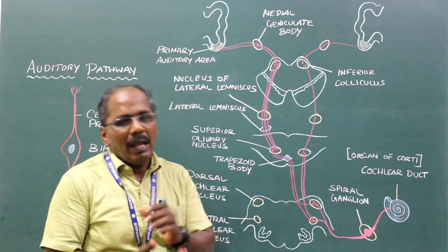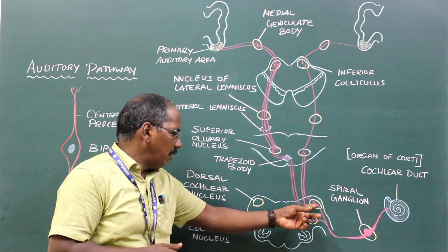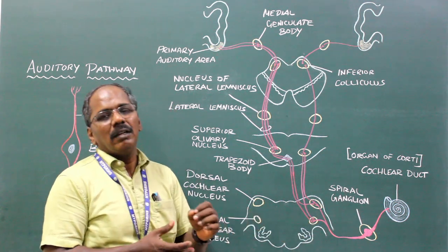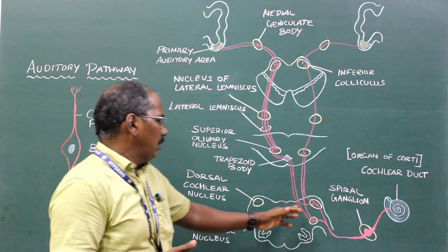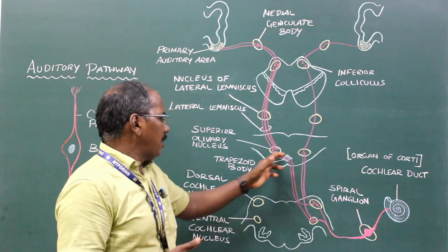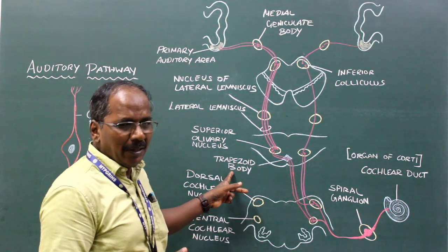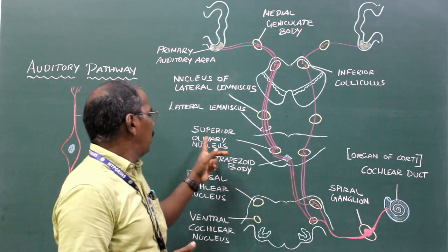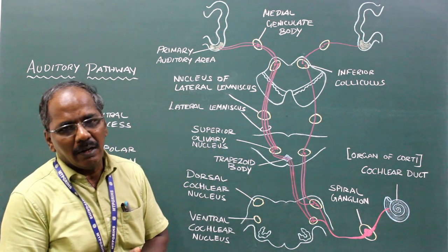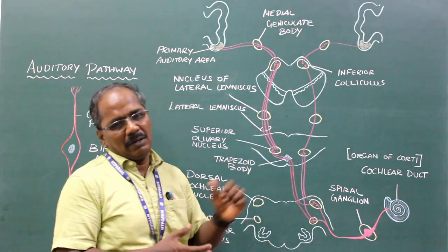The second order sensory neurons arise from the cochlear nuclei, cross to the opposite side in the trapezoid body, and relay in the superior olivary nucleus. Some of the fibers are uncrossed.